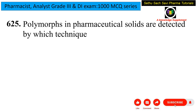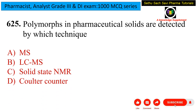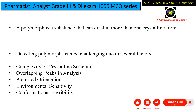Next question: polymorphs in pharmaceutical solids are detected by which technique? Options are MS (mass spectrometry), LC-MS (liquid chromatography-mass spectrometry), solid-state NMR, or Coulter counter. Polymorphs are substances that can exist in more than one crystalline form. Detection is challenging due to complexity in crystalline structures, overlapping peaks, preferred orientation, environmental sensitivity, and conformational flexibility.